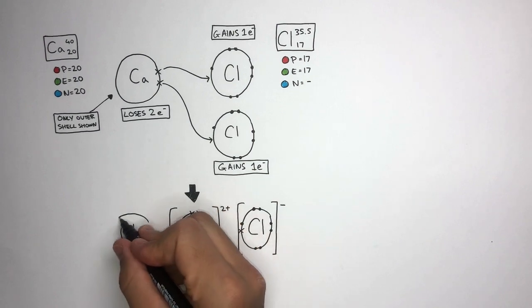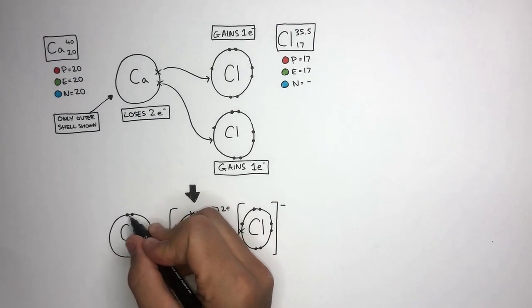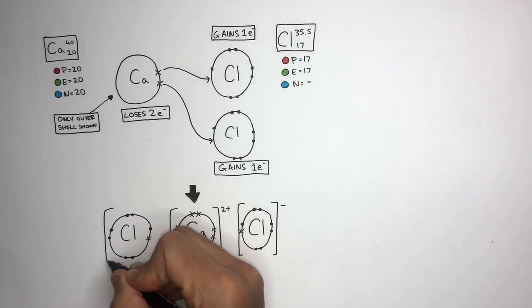Because there are two Chlorine ions for every Calcium ion, you need to draw the second Chlorine ion like you did before.